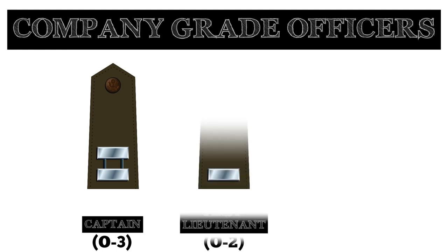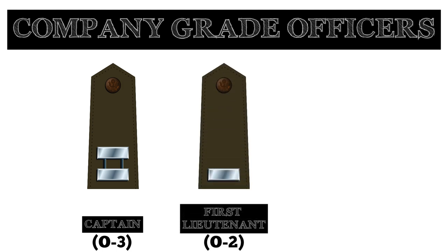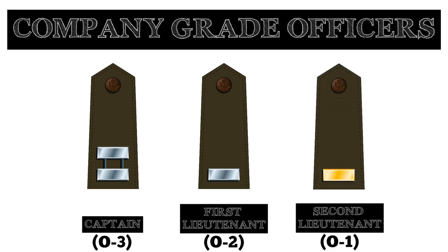Below the rank of captain is the rank of first lieutenant. A first lieutenant is an experienced lieutenant with 18 to 24 months of service. They may serve as the platoon leader of a specialized weapons platoon or as the executive officer of a company. The rank insignia for first lieutenant consists of one silver bar. Second lieutenant is the entry-level commissioned officer rank in the United States Army. A second lieutenant is generally placed in command of a platoon consisting of 16 to 44 soldiers, including two or more squads. The rank insignia for second lieutenant features a golden bar.